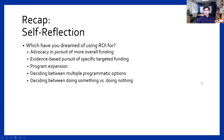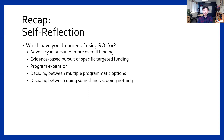For self-reflection in terms of what we dream of using ROI for — as I mentioned last session, we tended to focus on advocacy for funding or pursuit of specific targeted funding. Today I might push us to focus on program expansion, deciding between doing something and nothing, or deciding which program to use. Because it reads differently to say the ROI is negative 13% and leave it at that, versus comparing: this program has an ROI of negative 13%, this one returns 13 cents, this one has an ROI of negative 60 cents — at least that's comparative.